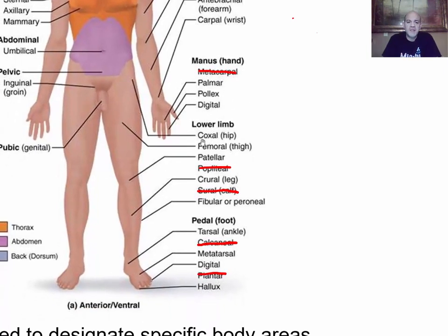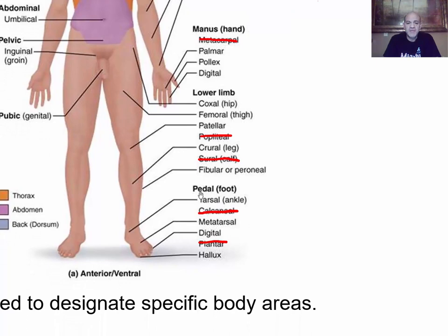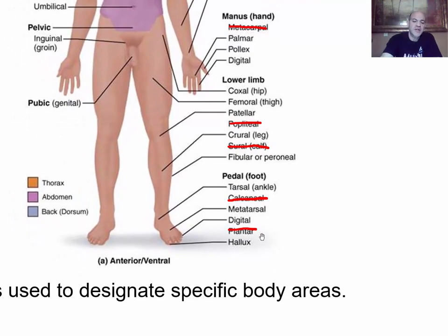For the lower limb: the hip area is coxal, the thigh is femoral, the kneecap region is patellar, and the lower leg is crural. The lateral side of the leg is fibular or peroneal — the fibula bone runs there. The ankle bones are tarsal, the region after that is metatarsal, and the toes are digital. The big toe specifically is called the hallux.